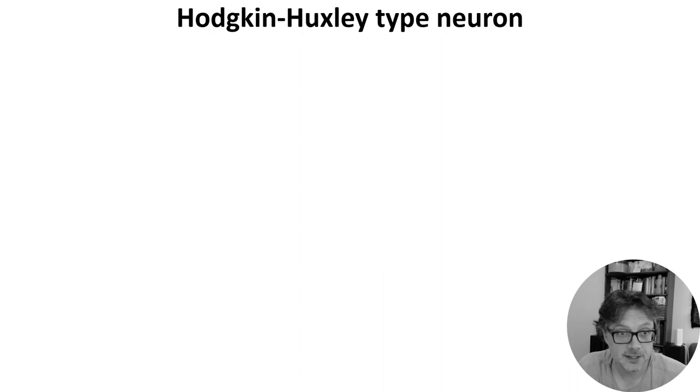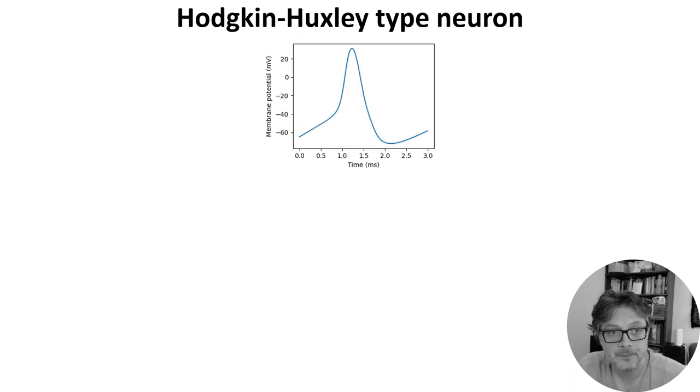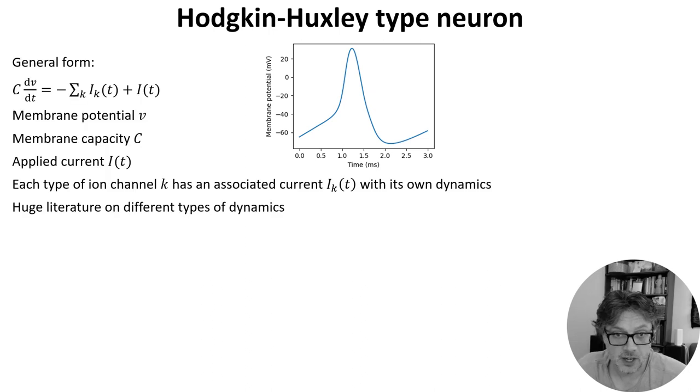We'll start with the famous Hodgkin-Huxley neuron. You can see an action potential plotted with this model here. The way these models are derived is by treating the cell membrane as an electrical circuit consisting of a capacitor and a number of voltage dependent resistors corresponding to the different ion channels.